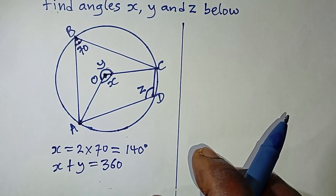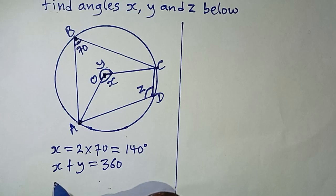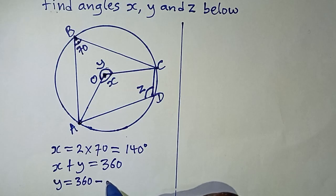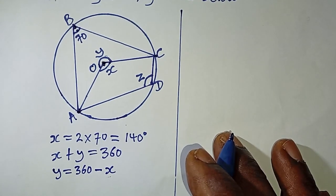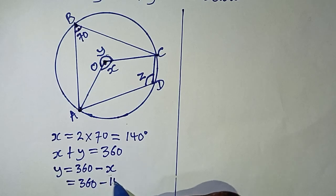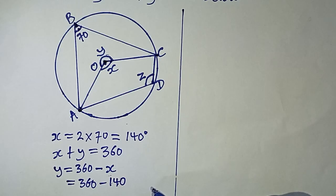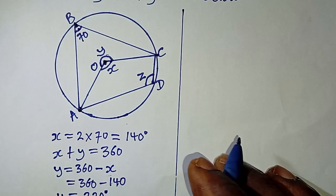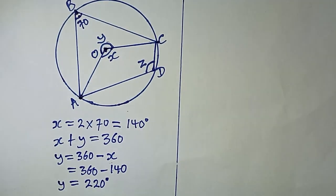Since we already know the value of x as 140, we can obtain y. So y is equal to 360 minus x, and since x is 140, that gives us 360 minus 140, which equals 220 degrees. So y is equal to 220 degrees.